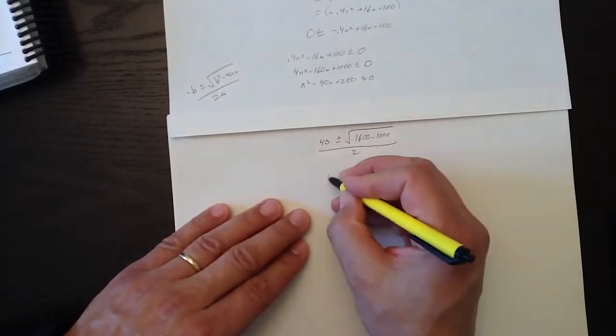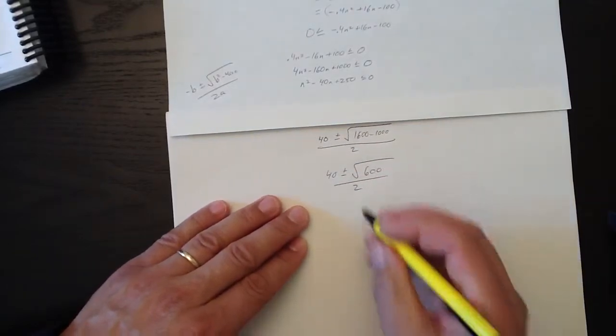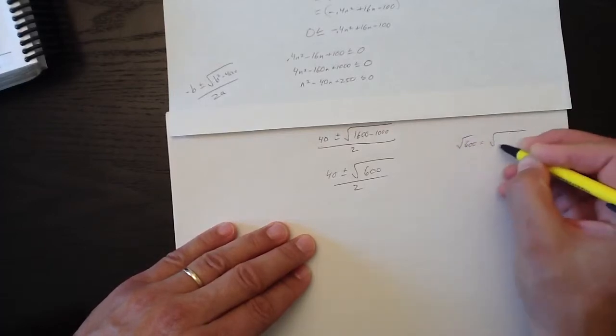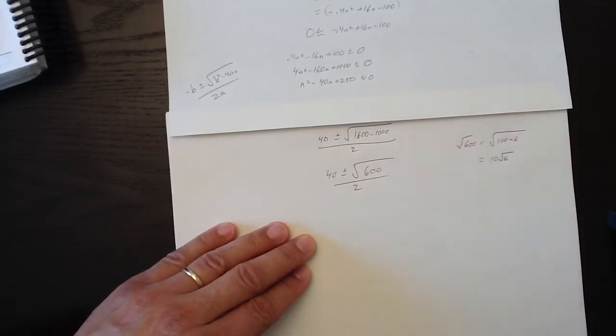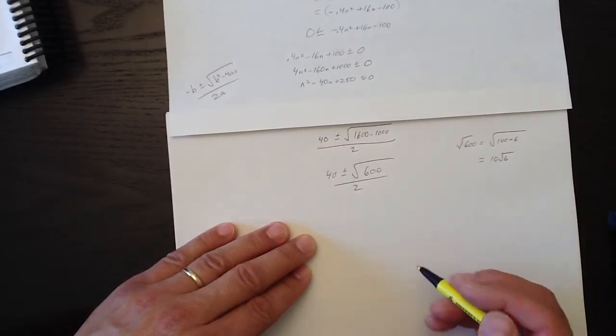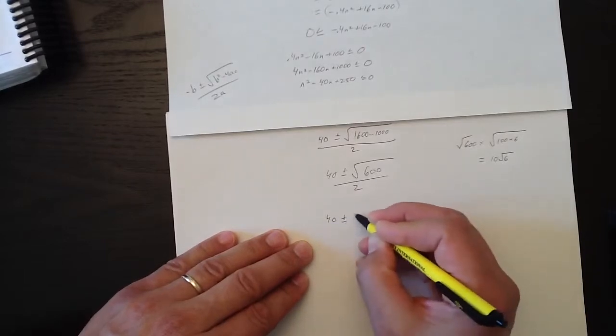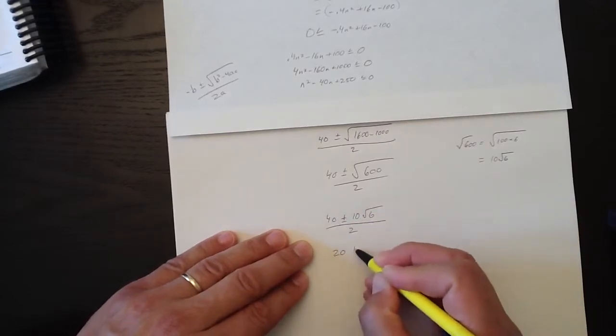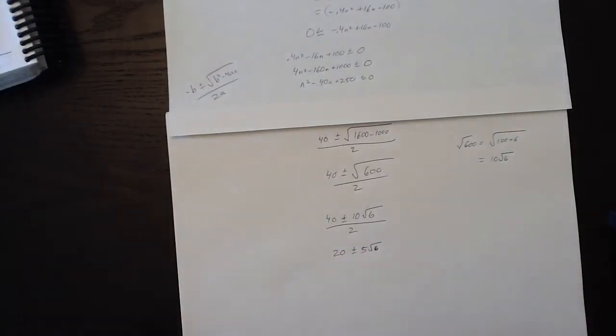Simplifying that again. 40 plus or minus root 600 over 2. And root 600 equals the root of 100 times 6, which equals 10 root 6. So, we've got 40 plus or minus 10 root 6 over 2. And we can take the 2 out of here. So, that's 20 plus or minus 5 root 6. So, 20 plus or minus 5 root 6 are our two values.